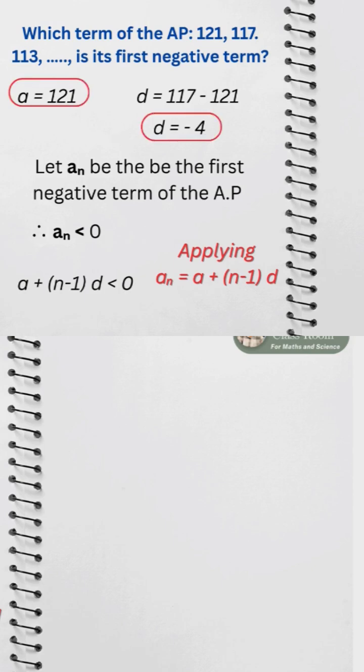Replacing a with 121 and d with negative 4, we get 121 plus n minus 1 times negative 4 less than 0.